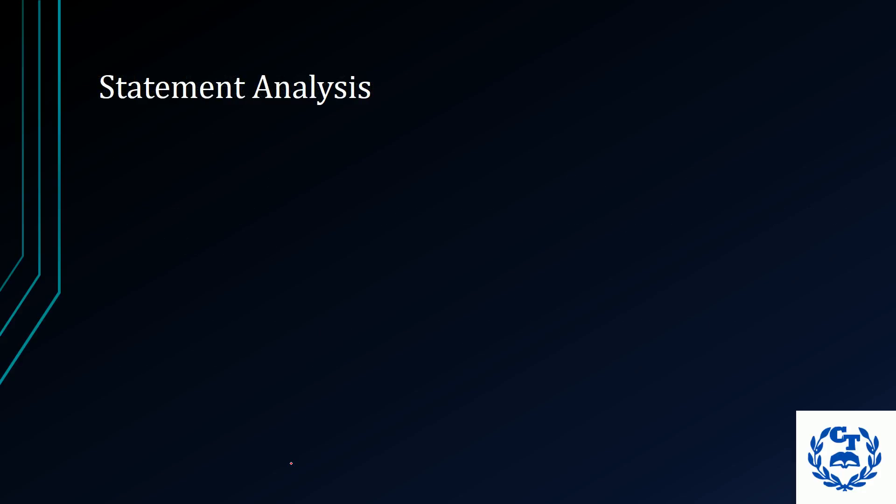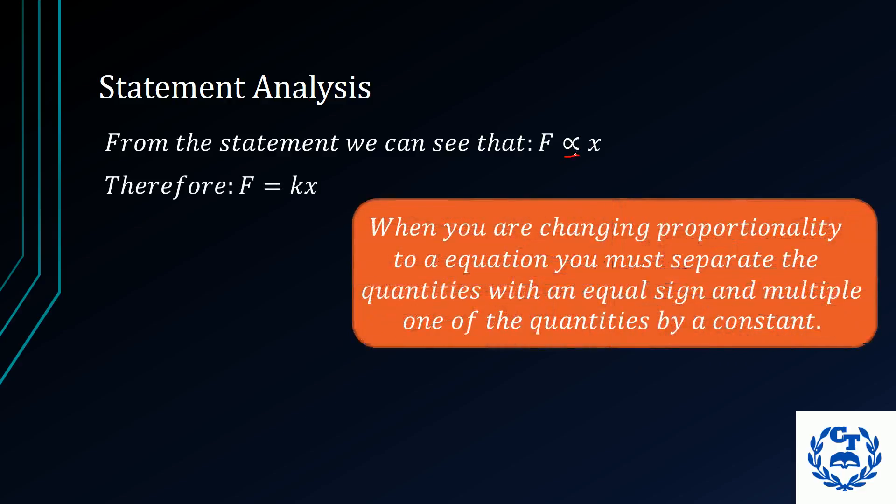So now that we know what Hooke's Law is, we can take that statement and analyze it. From the statement itself, we see that F is proportional to X. Now, we know that if we have to change a proportionality relationship between quantities, what we have to do is simply remove the symbol for proportionality.